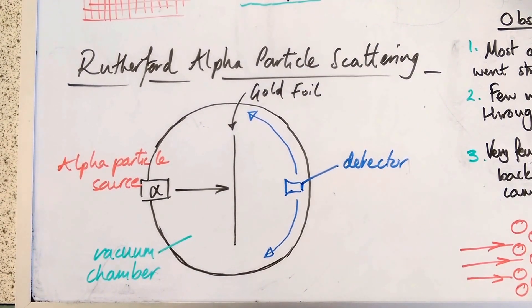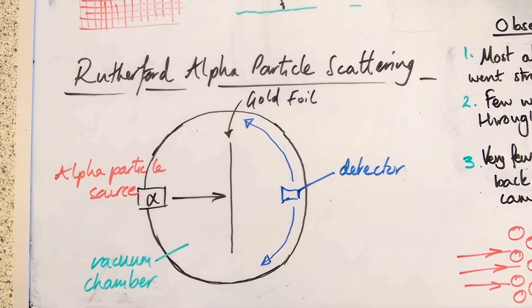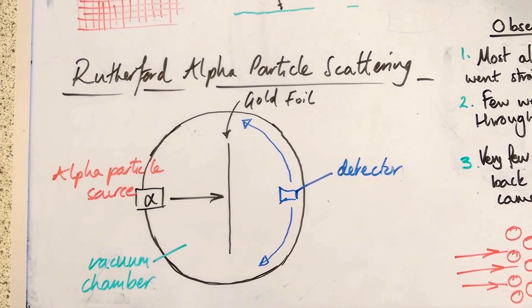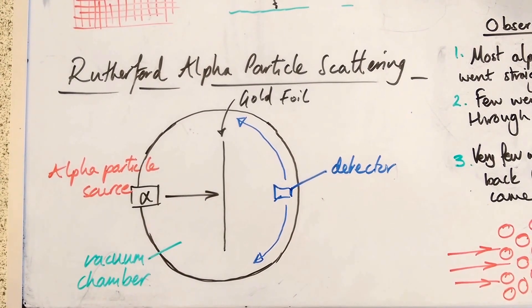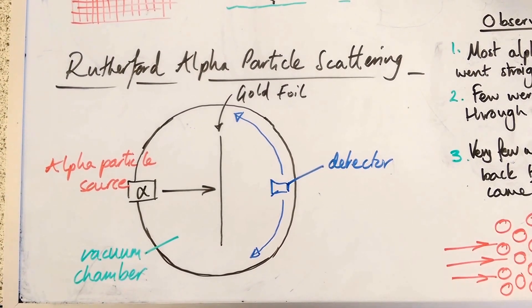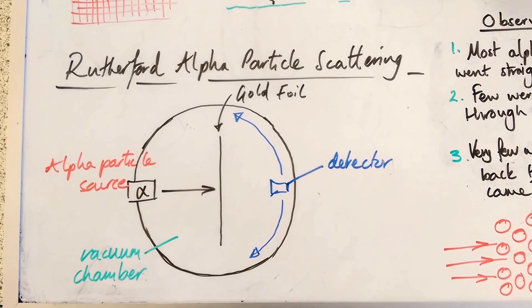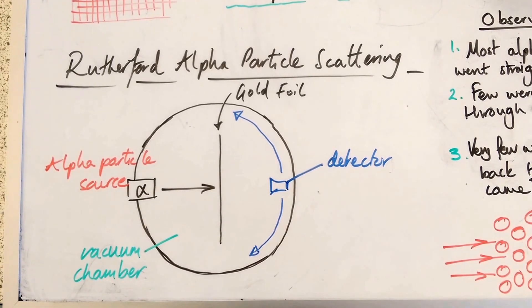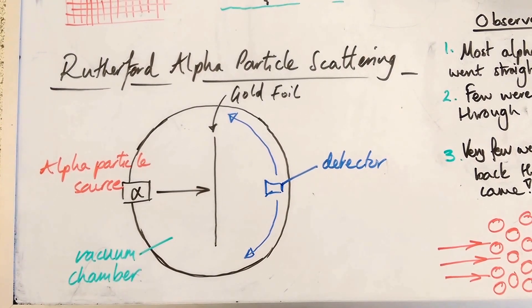He was astounded when most of them, about 99% of the alpha particles, went straight through the gold foil. The gold foil is very, very thin gold. But he was still amazed because little pieces of cake shouldn't be able to fly through the cake, the plum pudding model. So he had to readdress the model and change the model based on the new evidence.